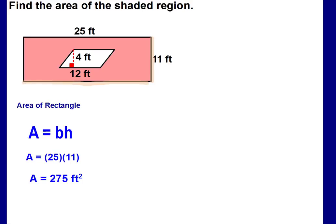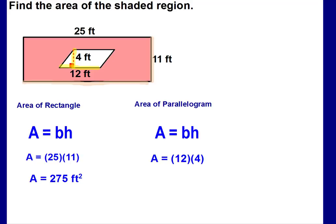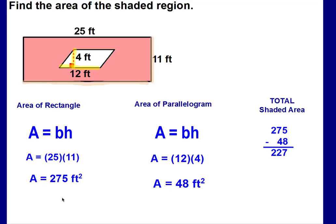Now we find the area of the parallelogram. Area equals base times height. The base is the flat side, and the height — perpendicular to the base — is 4 feet. Substituting: area equals 12 times 4, giving 48 feet squared. We don't add the two together; we subtract to find the shaded area only. Taking 275 minus 48, the area of the shaded region is 227 feet squared.